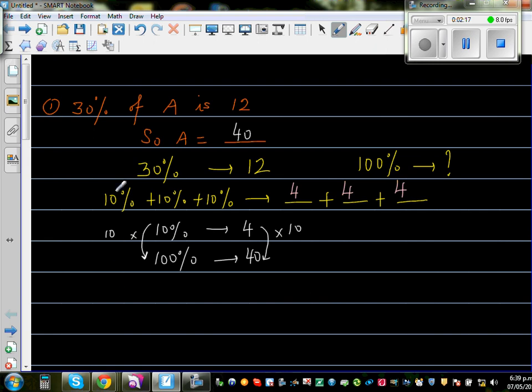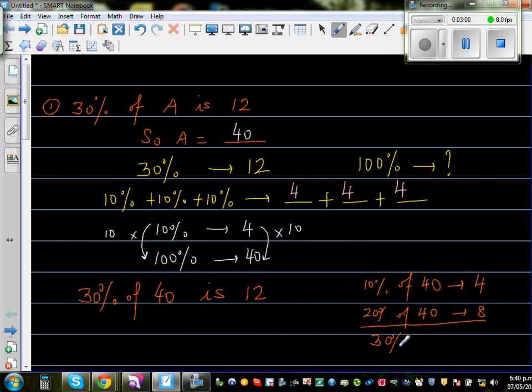So what is the question? Understanding the question is equally important. The statement says that 30% of A, your A is now 40. So 30% of 40 is 12. Does it make sense? Yes. Because 10% of 40 is 4. So that's fine.